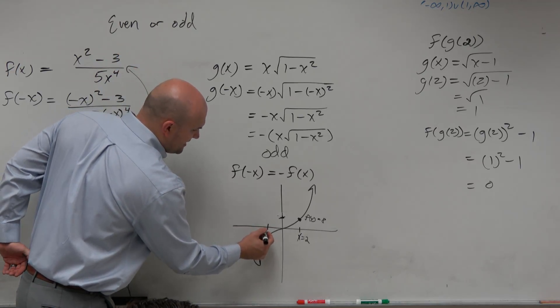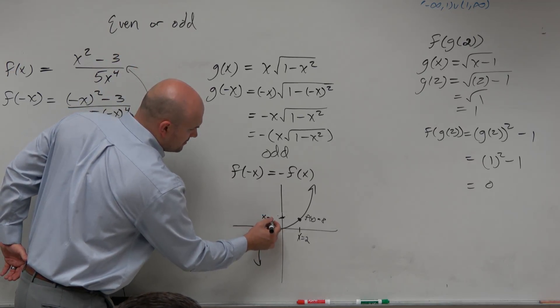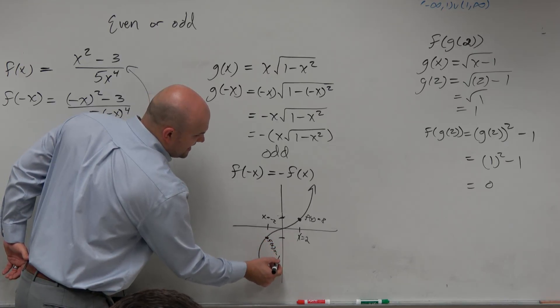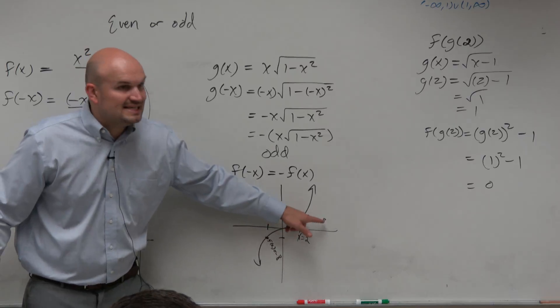Well, what about when I plug in negative 2? I get f of x here, which is equal to negative 8. So you guys see how it's the opposite? It's the same value, but it's the opposite.